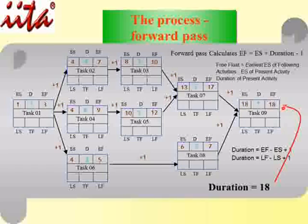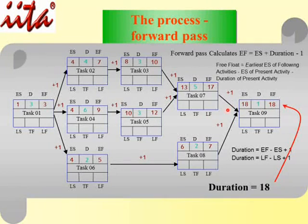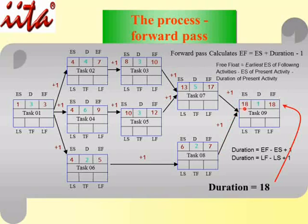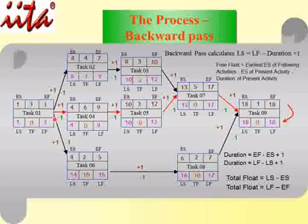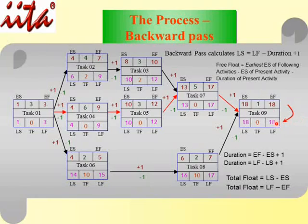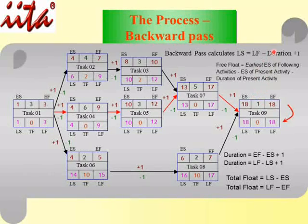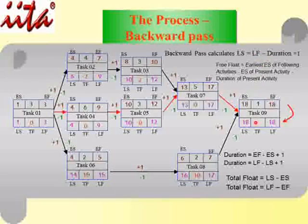Now let's look at the backward pass. Remember that during the forward pass, you always take the highest value when paths converge. For the backward pass, you repeat the 18-month project duration at the end node. The formula calculates the Late Start: LF = 18, Duration = 1, so LS = LF − Duration + 1 = 18 − 1 + 1 = 18. This confirms the Late Finish is also 18.